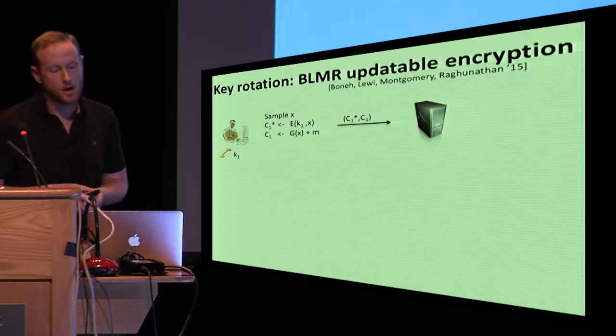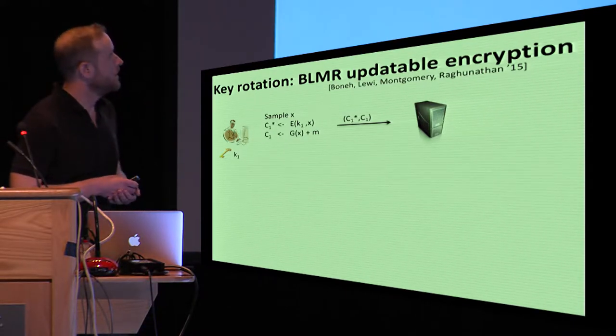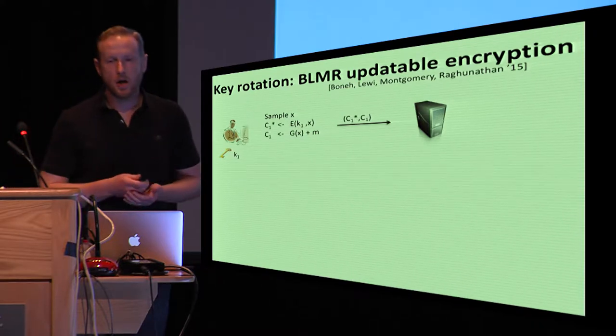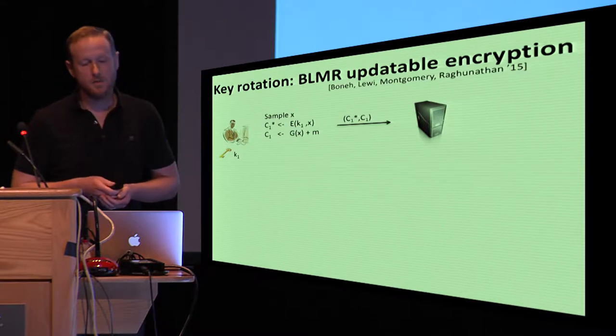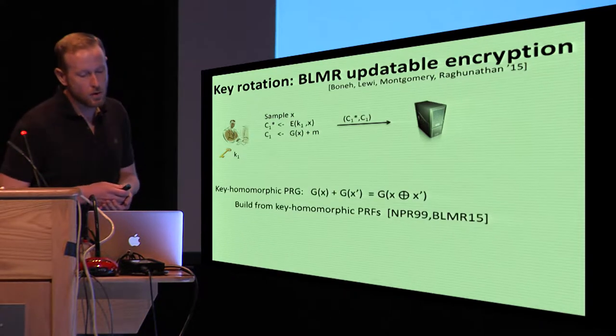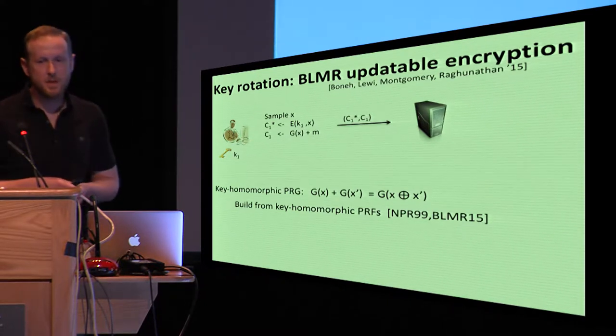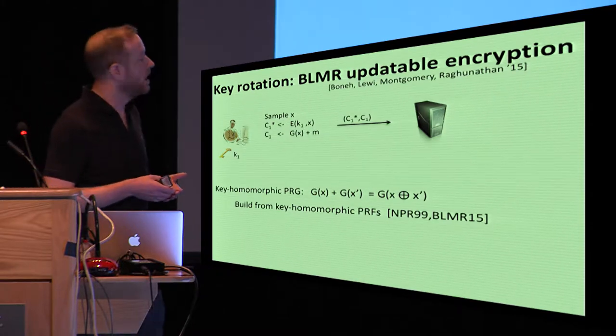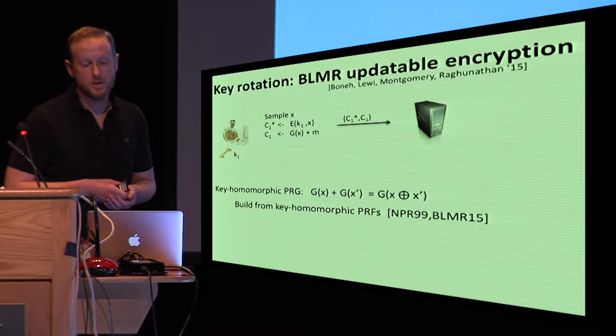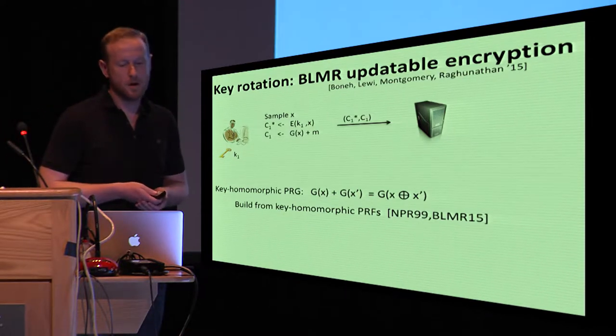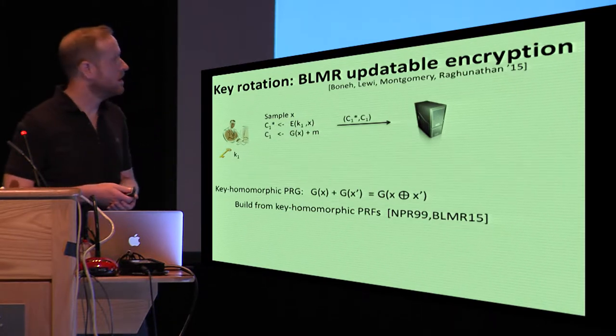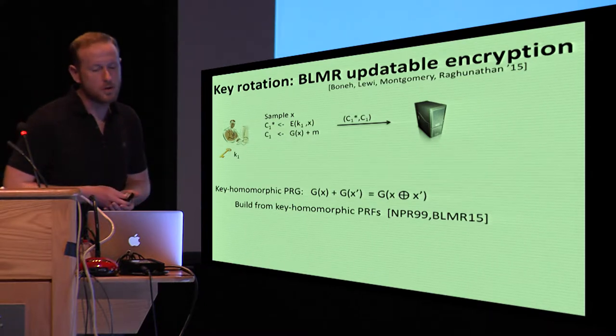So motivated by that same observation, there's a nice prior work by Boneh, Lewi, Montgomery, and Raghunathan, or I'll refer to them as BLMR, and they introduced this idea of updatable encryption to try to achieve this type of key rotation where all secrets are changed. They also use a KEM-DEM style construction where they have an encryption of a DEM key using some kind of standard symmetric encryption. But then the data encapsulation portion is a little bit unique. They use what's called a key homomorphic PRG, or pseudorandom generator, that has some special properties. G takes a seed X and maps it to a group element in a way that has this additional homomorphism property that you can take G of X plus G of X-prime for some other seed X-prime, and this is equal to G of X XOR X-prime.